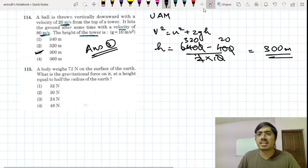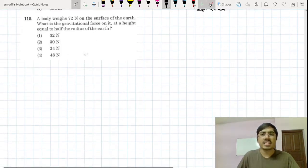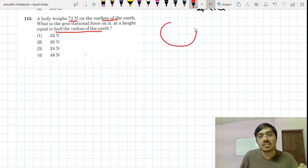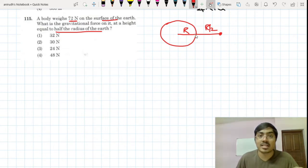The next question is from the topic of gravitation, a routine kind of question, more easier than ever. 72 newton on the surface of earth. What is the gravitational force at a height equal to half the radius of earth? You have the earth over here, so this much is the distance, that is radius, and again there is another distance that is r by 2.